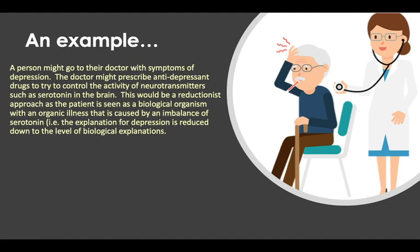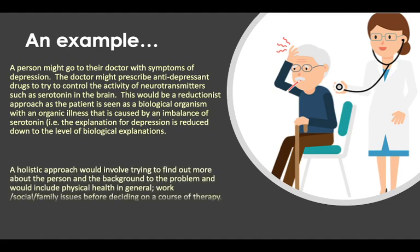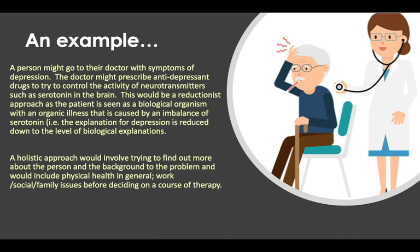Those of you who've done OCD and depression would already know this. A holistic approach would instead try to find out more about the person and the background to the problem. This includes looking at their physical health, their work life, their social circumstances, and family issues — understanding all of that before deciding a course of therapy. It's not just, 'You're obviously having some issues with your neurotransmitters — here are some serotonin inhibitors.' That's not going to work.